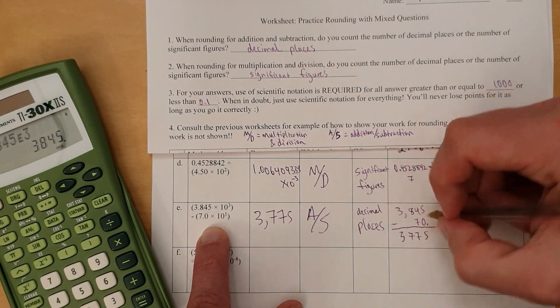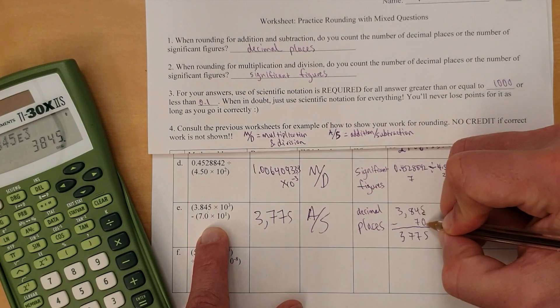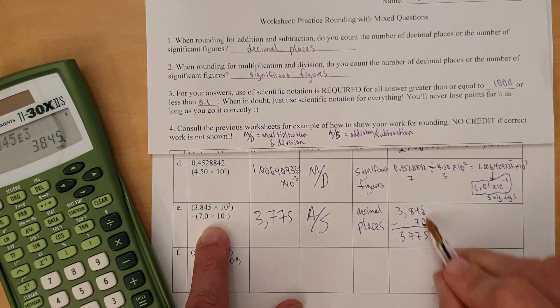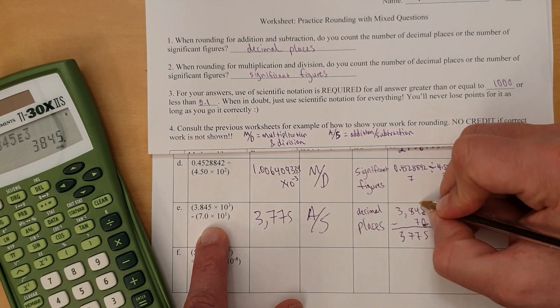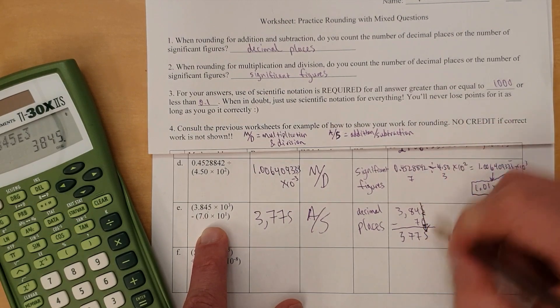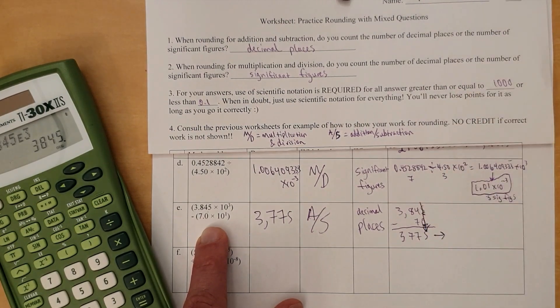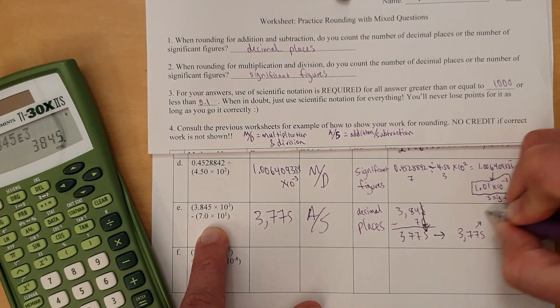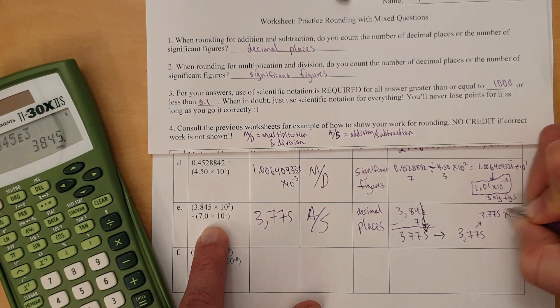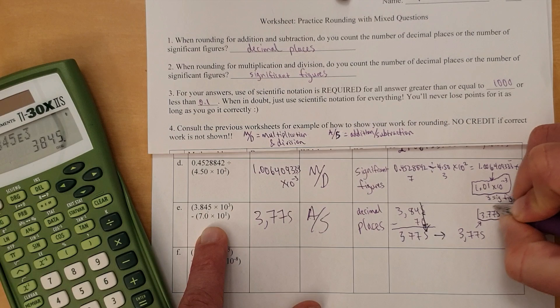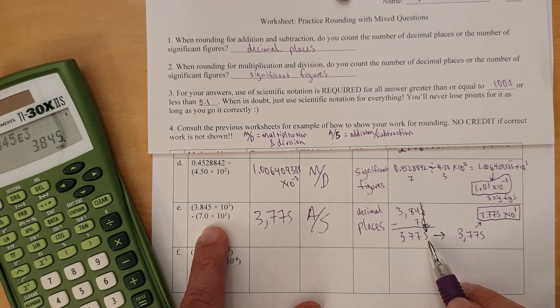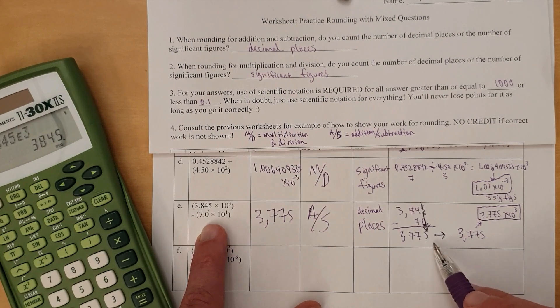We wrote the answer of 3,775. Now, last sig fig on here is on this bot, and this is the last sig fig for the bottom number. They are... Both last sig figs are in the same location, which means we round here, which means we just leave it as is. 3,775, a.k.a. 3.775 times 10 to the third. So, you don't always have to round off. Sometimes a calculator will happen to give you the correct thing. It can happen.